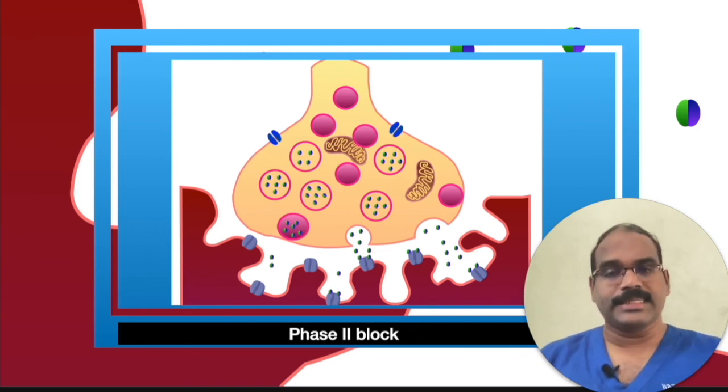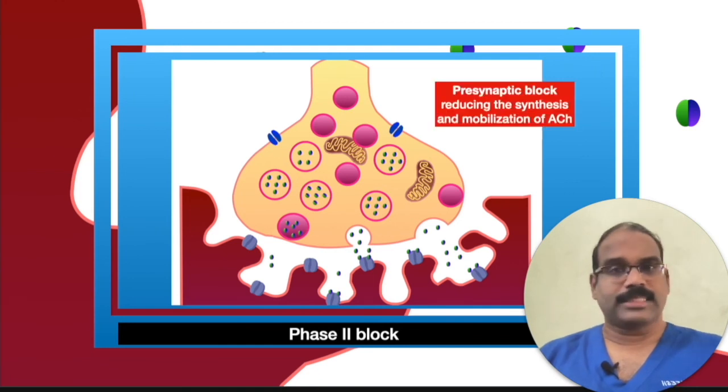After the initial depolarization, the membrane potential gradually returns towards the resting state even though the neuromuscular junction is still exposed to the drug. Neurotransmission remains blocked throughout.